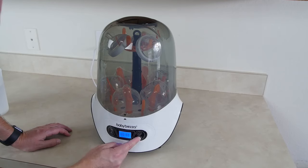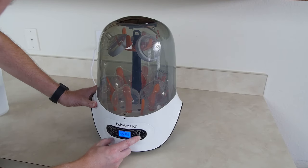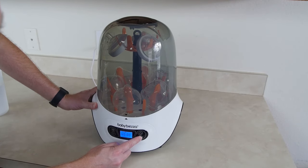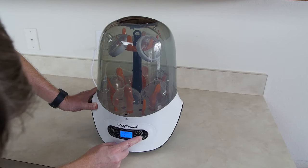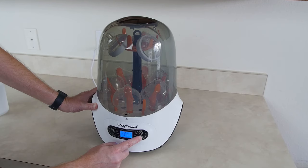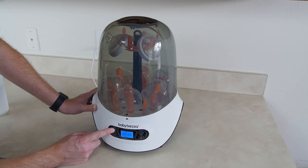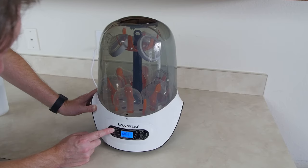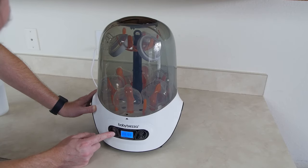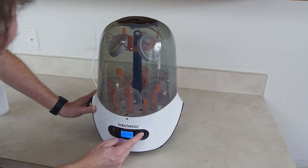So if I push sterilize and dry once it goes 45 minutes. If I press it a second time 60 minutes and third time is 30 minutes. I don't know why it starts in the middle. If I want to just dry it I push the button for fan once for 30 minutes, twice for 45, third time for 60.